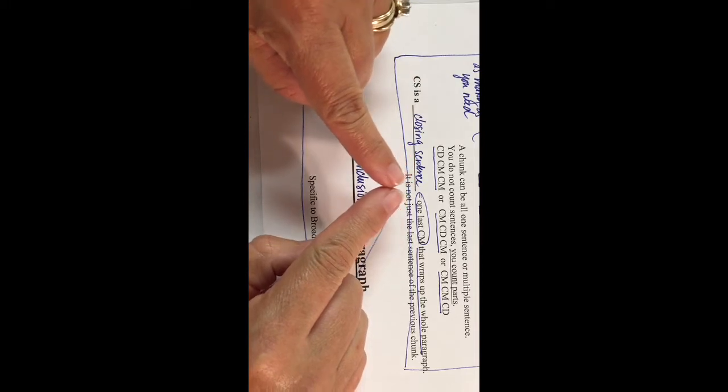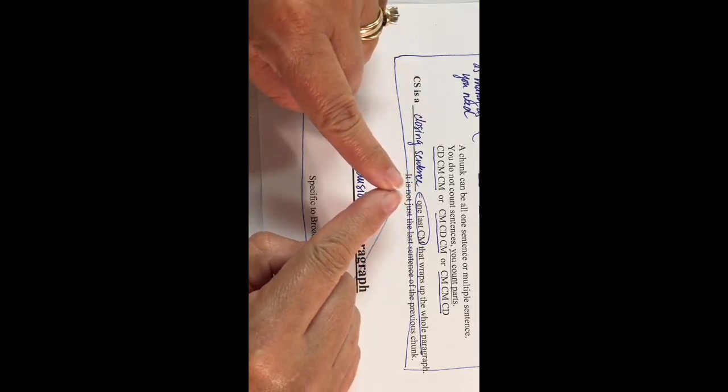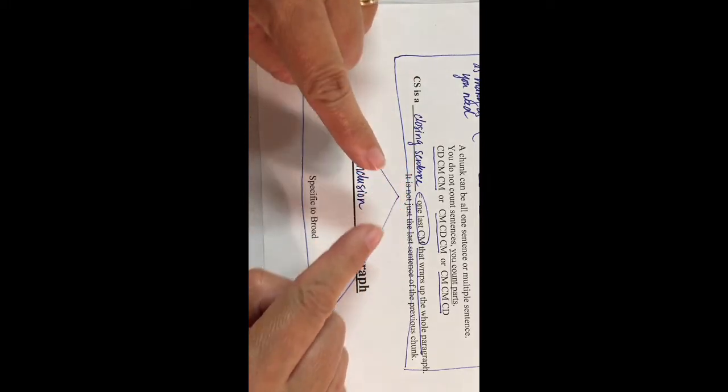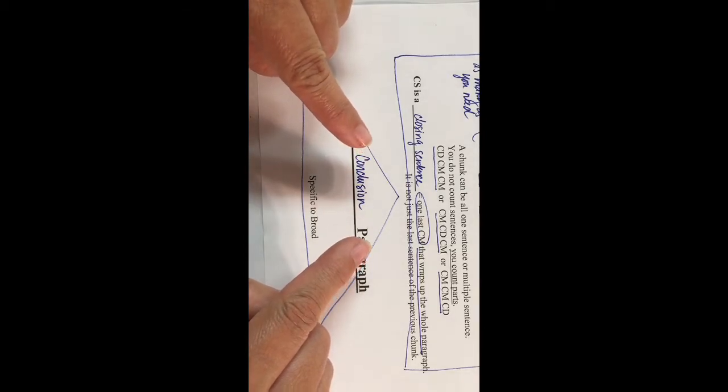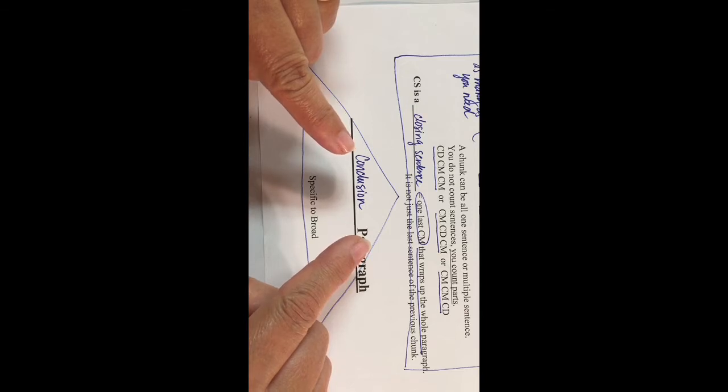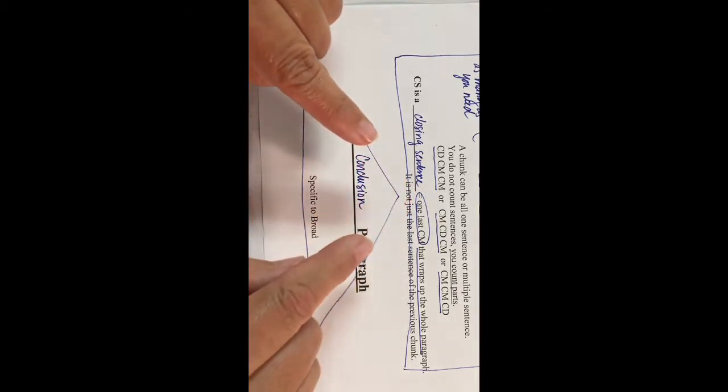I'm going to start specific: Country Day is a school that prides itself on preparing students for life. Next one: the hope of the administration and faculty is that each student gets to attend the college of his or her choice. The last sentence might be: these students then go on into the world to make it a better place. So it goes from Country Day to college to making the world better—specific to broad.